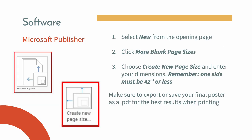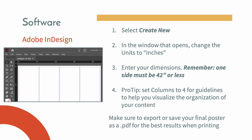If using Microsoft Publisher, when opening a new document, click more blank page sizes, then create a new page size and enter your dimensions. Again, make sure you export or save your final poster as a PDF. In Adobe InDesign, when you create a new document in the window that opens, change the units to inches and enter your dimensions. Make sure you export or save your final poster as a PDF.